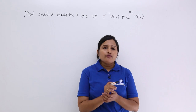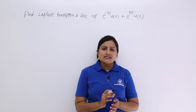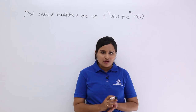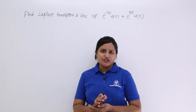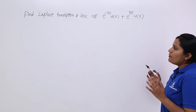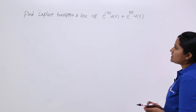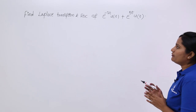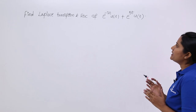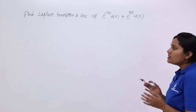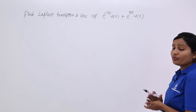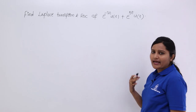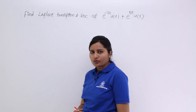In this video, we are going to discuss a problem related to Laplace transform and ROC of exponentials. Observe the problem: find the Laplace transform and ROC of e^(-2t)u(-t) + e^(5t)u(t). For this combination signal, we need to find the Laplace transform as well as ROC.